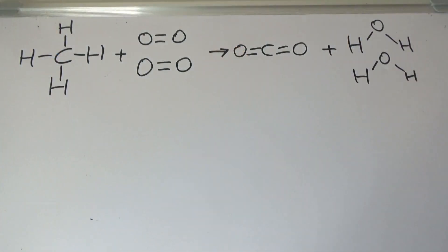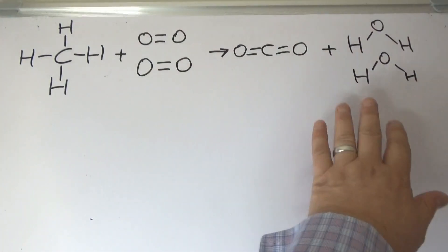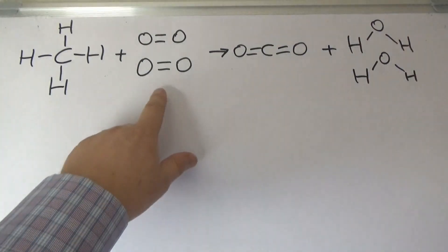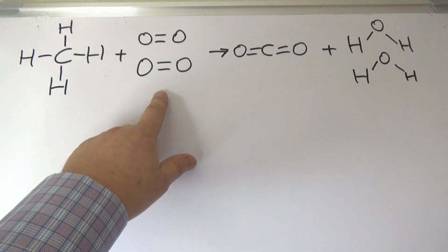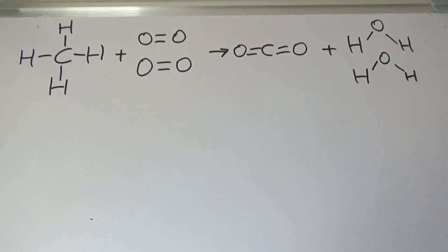So this is what a typical exam question would look like. We've got the reactant molecules and the products, and because we've got the displayed formulas it shows the bonds between the atoms. The question could be: work out the overall energy change for this reaction using the bond energies in the question.